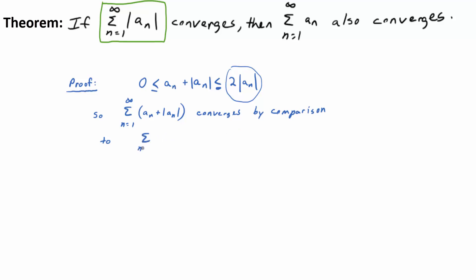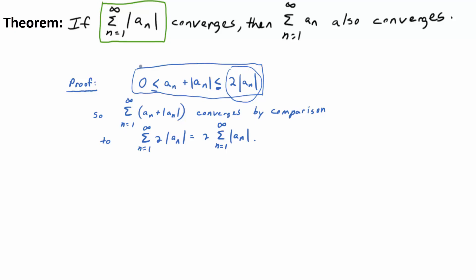To be precise in the comparison test: the sum of 2|aₙ| converges by assumption (since the sum of |aₙ| converges, you can factor the 2 out front), and therefore the sum of (aₙ + |aₙ|) converges by comparison. That completes the first part of the proof.